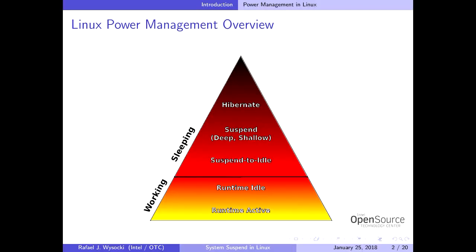The second difference is the procedure that must be carried out to put the system into a state or bring it back out. If the system is not in a sleep state, it is in the working state. The area below the black line in the diagram is referred to as the working state, but it is not a single state — it is a meta state covering the whole array of different configurations. The runtime active configuration, where all components are active, corresponds to the maximum power draw and sits at the bottom of the pyramid.